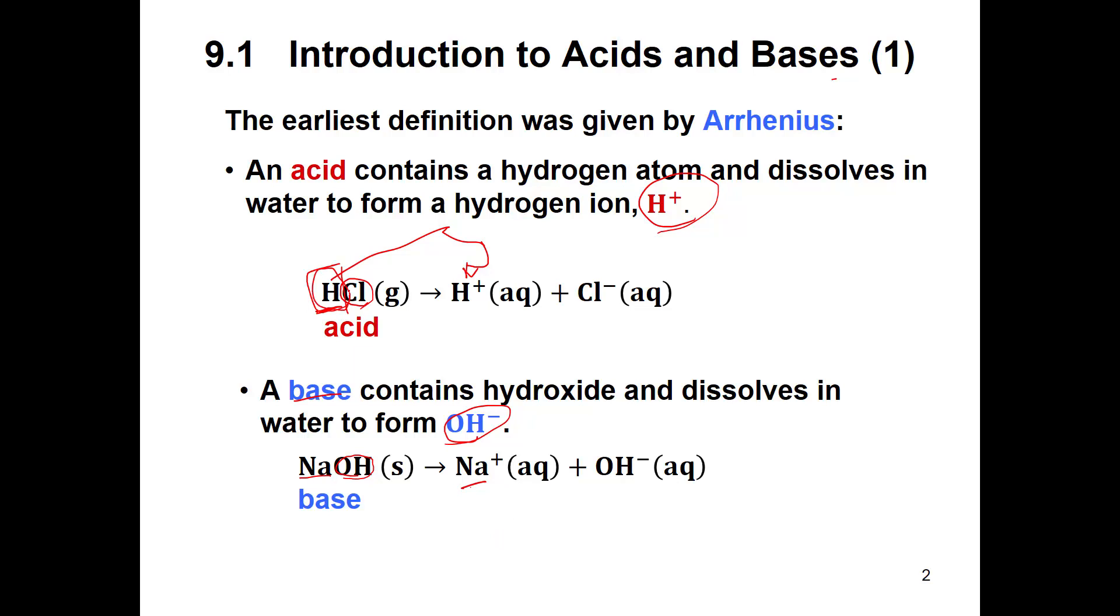So acids have the H's in front and they produce the hydrogens. A base has a hydroxide at the end and it produces hydroxides when you put it in water, and these are all in water.